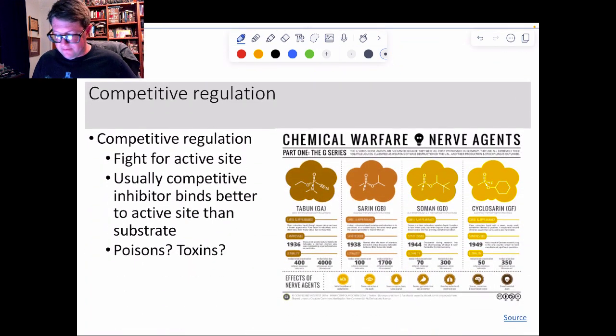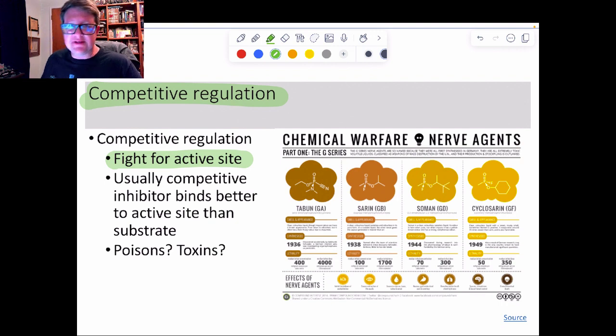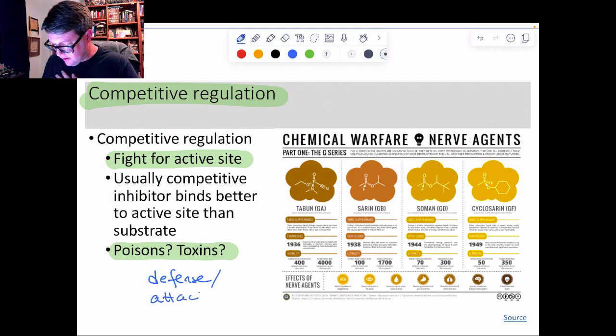This is the one that gets fun. And that's when we're fighting for the active site. We call that competition or a competitive inhibitor. And these are always going to be ones that fight for active sites. These are always poisons and venoms and toxins. So that's what these things turn out to be. These are things that we don't use. This is not what we would use. So these are defense and attack options.